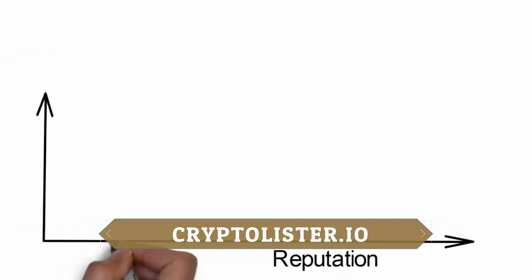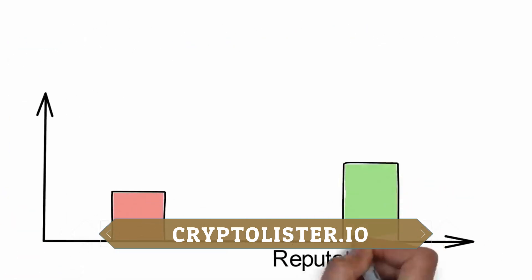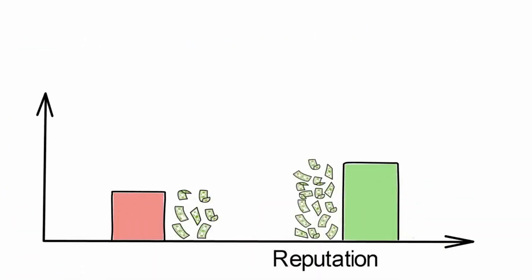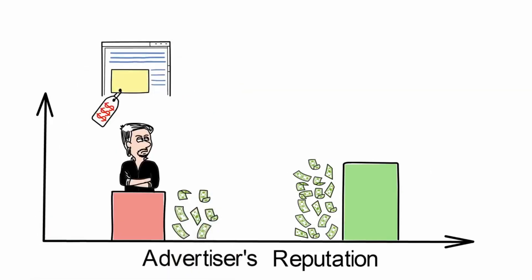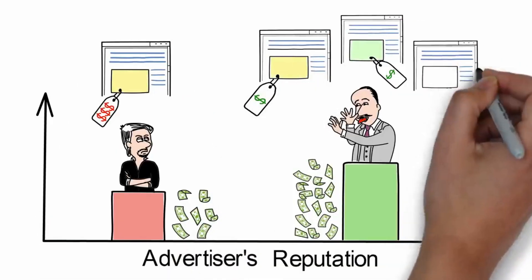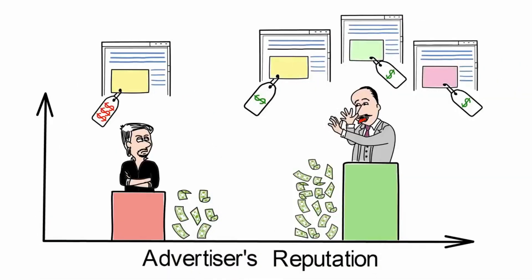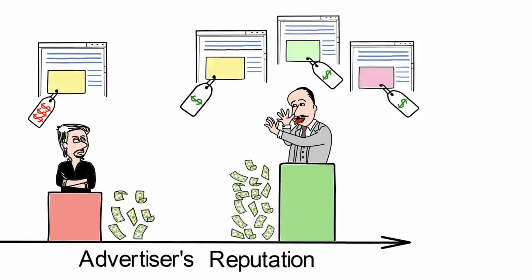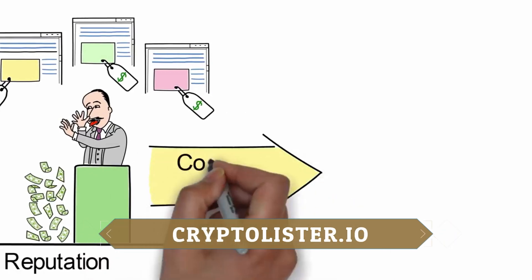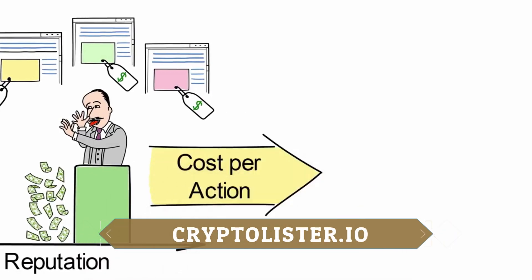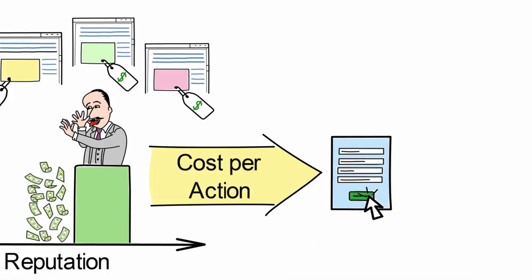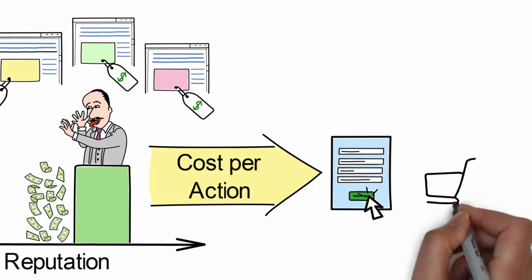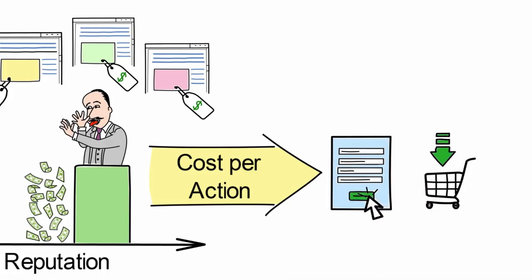As participants' reputation grows, their earnings grow as well. Advertisers with a good reputation will have their ads displayed more often and on better terms. Plus, they will be trusted to use performance-based compensation and only pay, for example, for actual requests from potential customers or only for concluded sales.